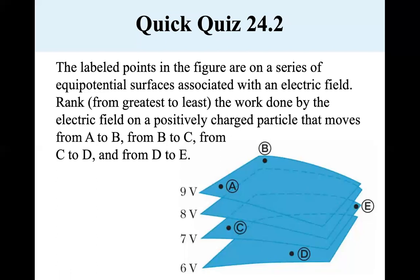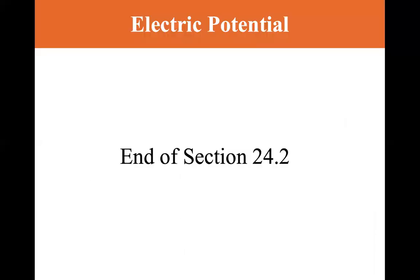So in ranking these, the first one is B to C that did two joules of work, and then C to D that did one joule of work, A to B is zero joules, and then D to E is negative one joule. And there it is, B to C, C to D, A to B, and D to E, okay, and that's the end of section 24-2.